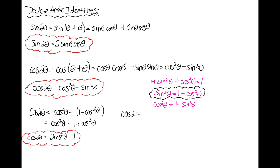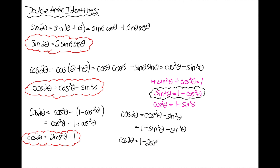Alternatively, starting again from cos(2θ) = cos²θ − sin²θ and substituting cos²θ = 1 − sin²θ instead, we get (1 − sin²θ) − sin²θ = 1 − 2sin²θ. So cos(2θ) can also equal 1 − 2sin²θ. In total, there are three ways to represent cos(2θ): cos²θ − sin²θ, 2cos²θ − 1, and 1 − 2sin²θ. The last two are more commonly used as they're more convenient. That's it for the Pythagorean, sum and difference, and double angle identities. If you have any questions, leave them in the comments below — have a great day!